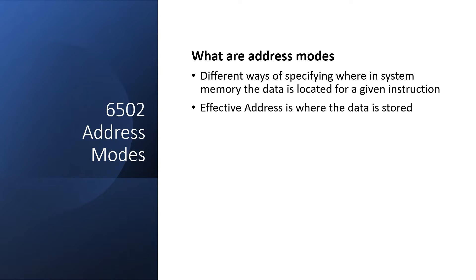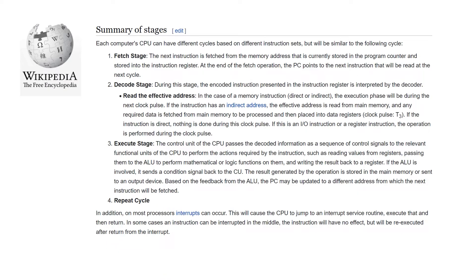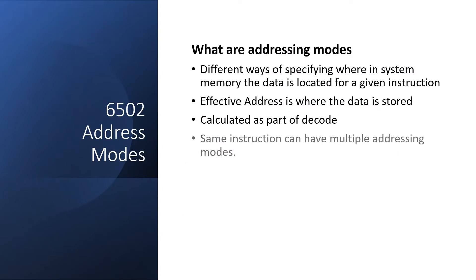The Effective Address is where the data is stored, and the Effective Address is calculated as part of decode. Here's the Wikipedia entry for the instruction cycle — I just want to make you aware that the Effective Address calculation is part of the decode stage. The idea is that we can add versatility to an instruction by allowing the data to be fetched in multiple different ways for any one given instruction.